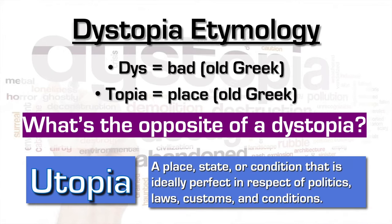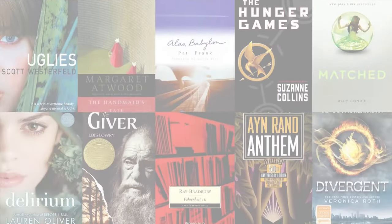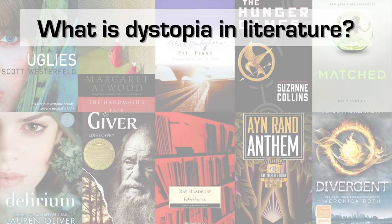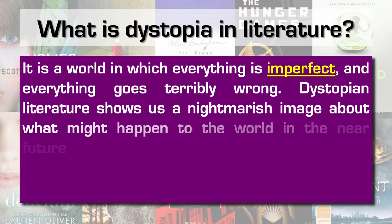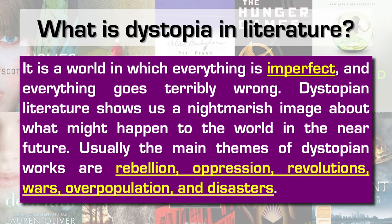Utopia is a place or state or condition that is ideally perfect in respect of politics, laws, customs and conditions. Then what is dystopia in literature?